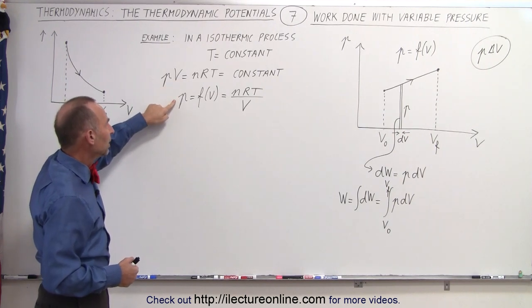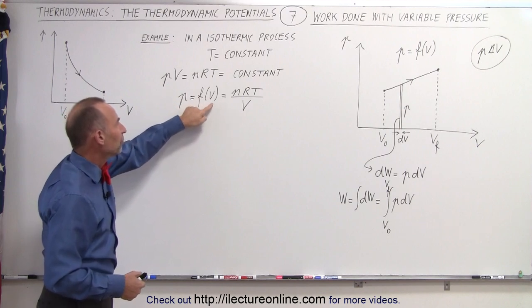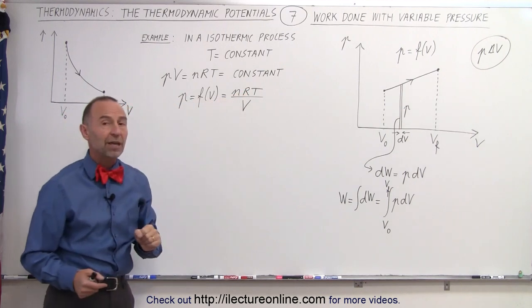If we then solve for P by dividing both sides by V, then P becomes a function of V, which is nRT divided by V.